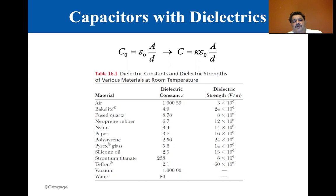Silicon oil, 2.5. Strontium titanate is 233. That's significant. Teflon is 2.1. Vacuum is exactly one. And water is 80.